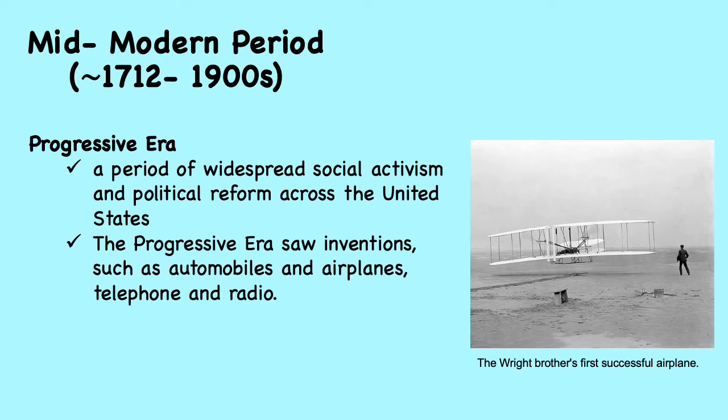The Progressive Era was a period of widespread social activism and political reform across the United States that spanned from the 1890s to the 1920s. The main objectives of the Progressive Movement were eliminating problems caused by industrialization, urbanization, immigration, and corruption in government. The Progressive Era saw inventions such as automobiles, airplanes, telephone, and radio that required mass production and brought people together. This picture shows the first successful airplane developed by brothers Wilbur and Orville Wright.